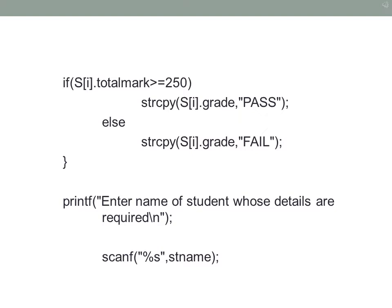You check if S[i].total_mark is greater than 250 for each student. If so you assign S[i].grade equal to pass. We use the string function strcpy because you cannot assign a string using an assignment operator — strcpy copies a character array to another character array, since pass is a string. If the total mark is less than 250 you assign S[i].grade equal to fail and the loop continues. Next you are asked to enter the name of the student whose details are required and it is copied to st_name.